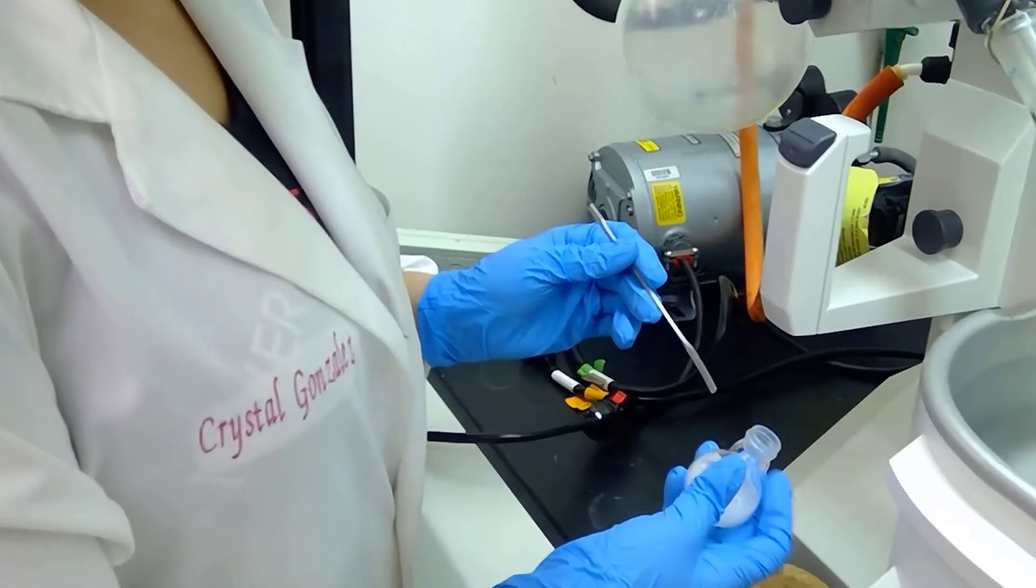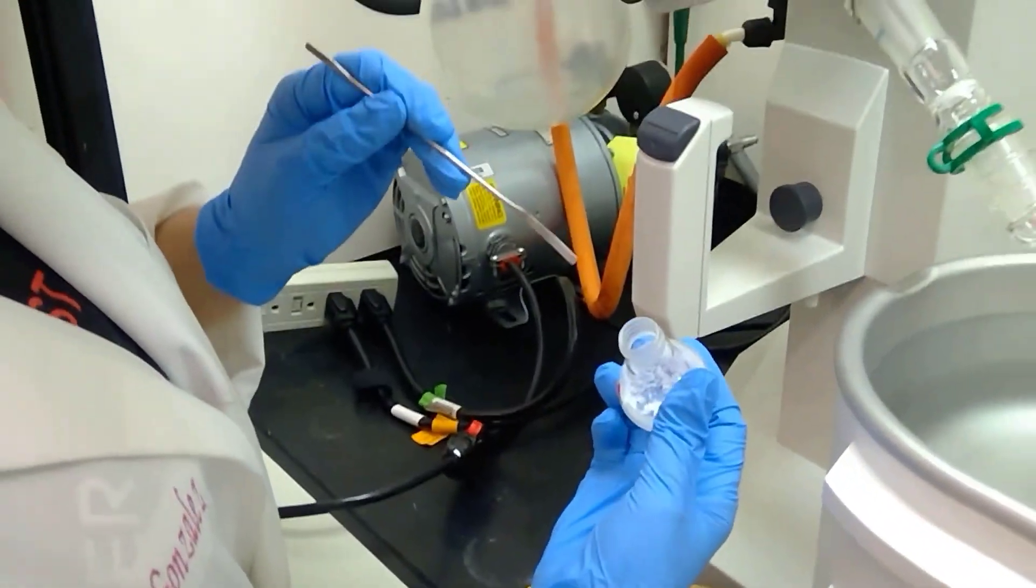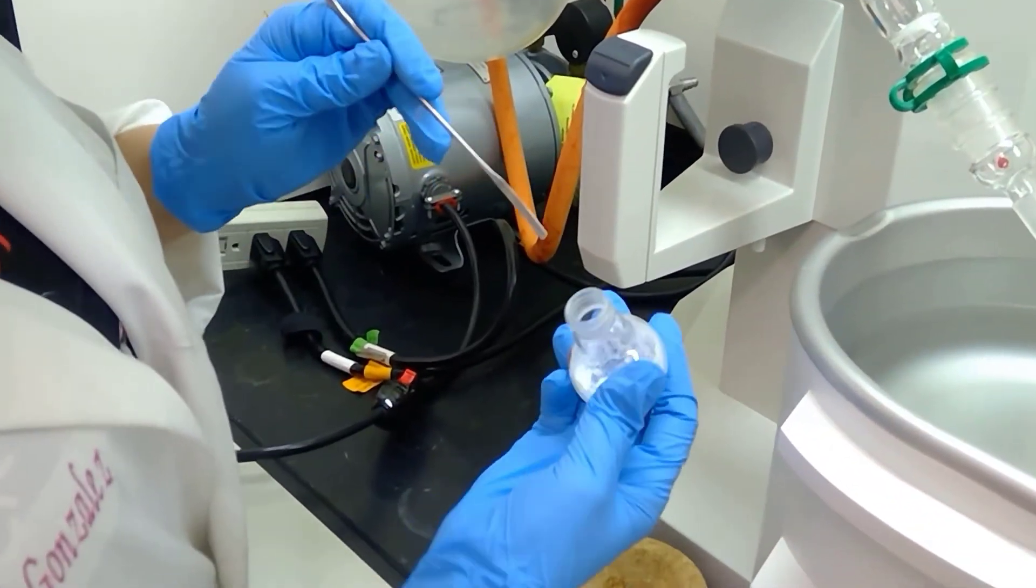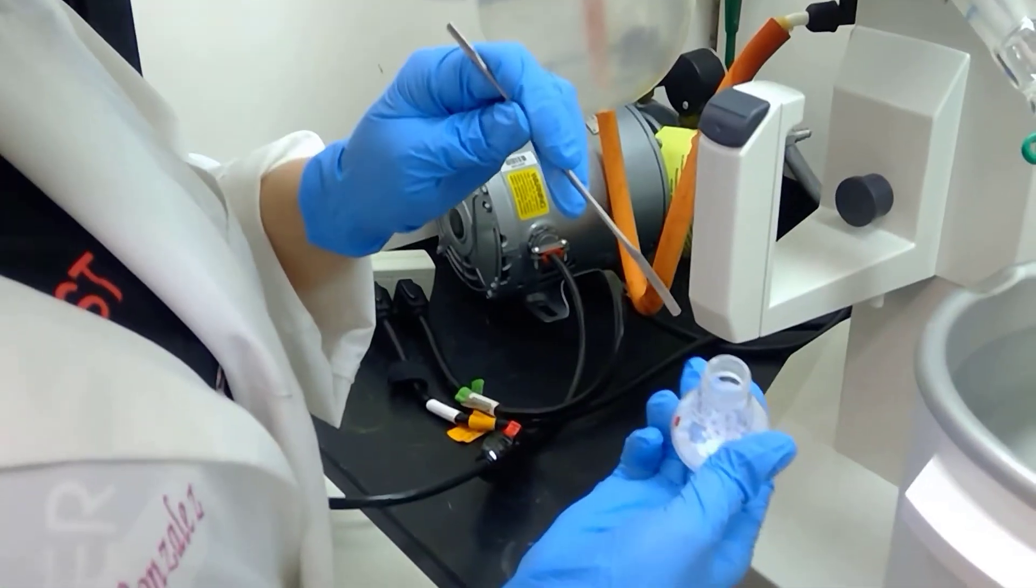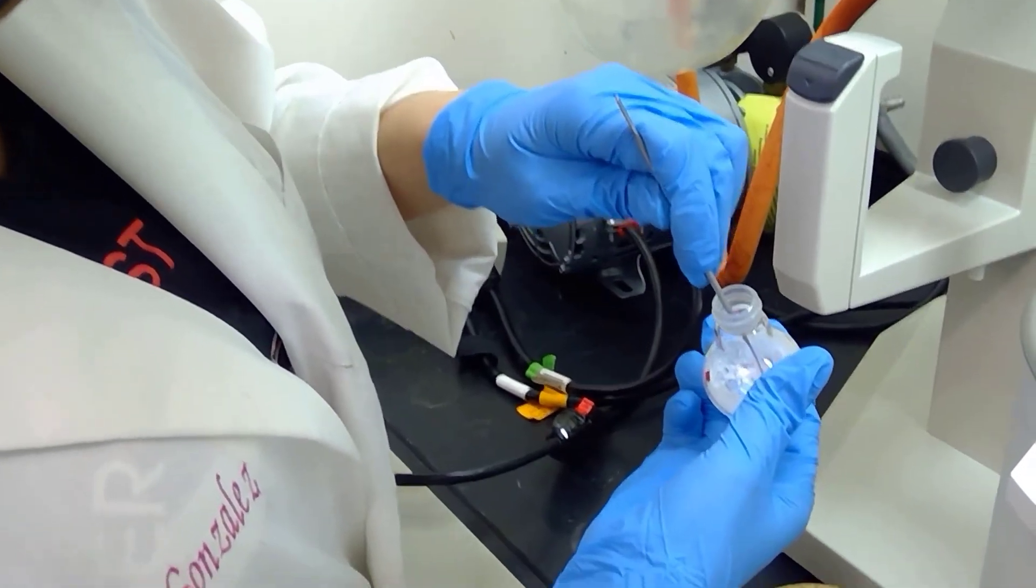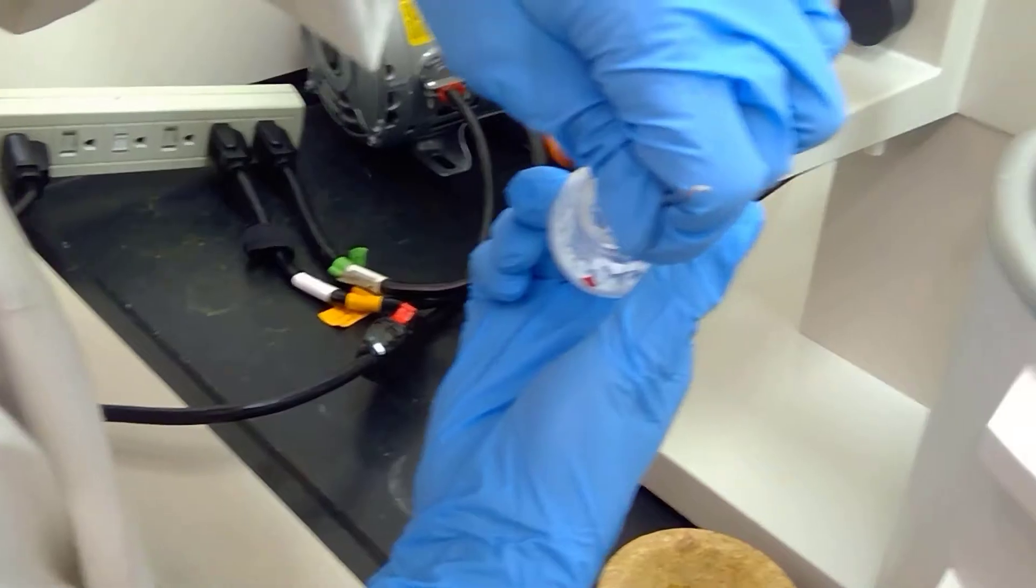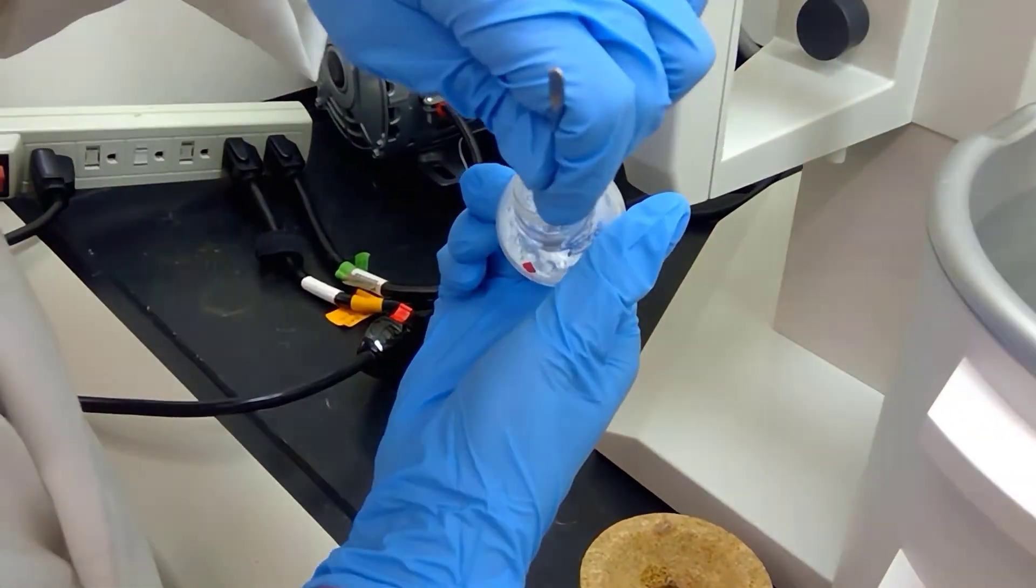I have removed the sample from the rotavap. Because tert-butyl methyl ether is a solvent that often sticks to the compounds you're trying to dissolve in it, I'm testing to see if our solid is actually solid. This is wonderful - I'm actually able to flake the compound and move it around with my micro spatula.